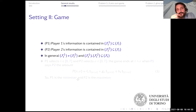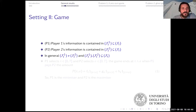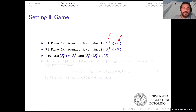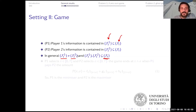We now introduce the concept of information using filtrations. Two players have two different filtrations, and both filtrations are sub-filtrations of the original one used to set up the probability space. The key point is that F1 and F2 need not be the same. In general they will be different and may be strictly smaller than the overarching filtration F. This measures the amount of information available to each player and allows us to discriminate between different sources of information.